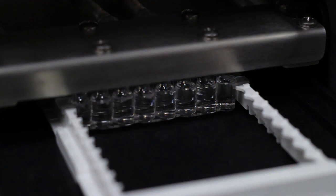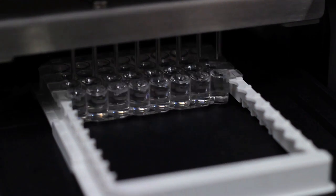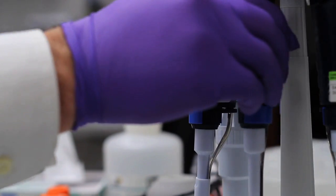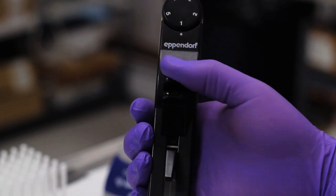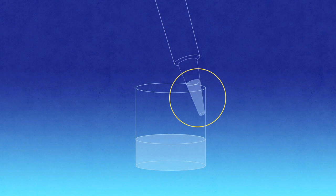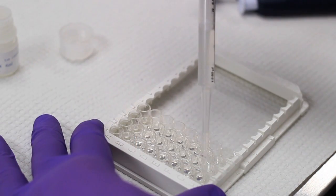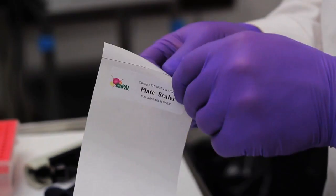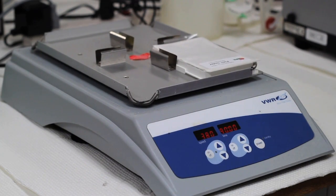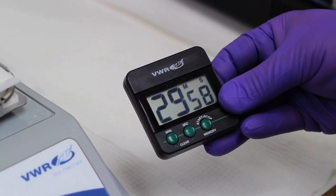After washing and aspirating the plate, it is time to add the goat anti-rabbit IgG HRP to each well. Once again, use a calibrated single channel repeating pipette, this time set to release 100 microliters. Don't forget to place the tip at the top of each well to avoid cross contamination. After all wells have been filled, use the second plate sealer to cover the plate and place it on an orbital shaker at a speed of 500, allowing the plate to incubate for 30 minutes.